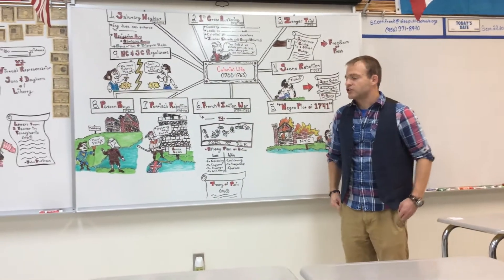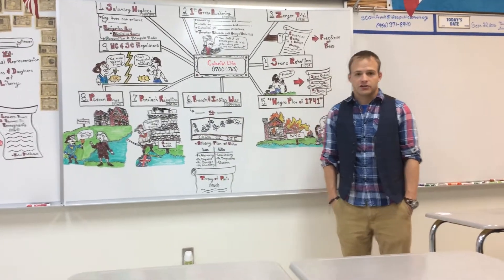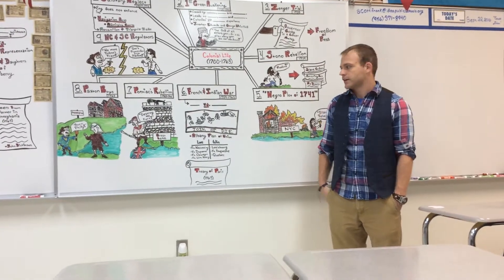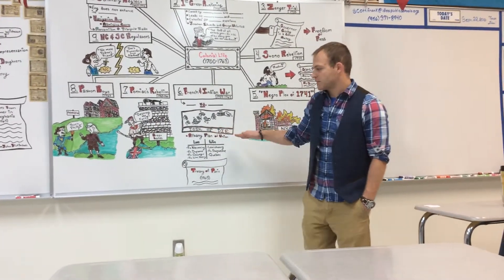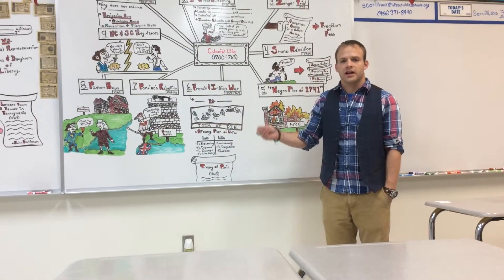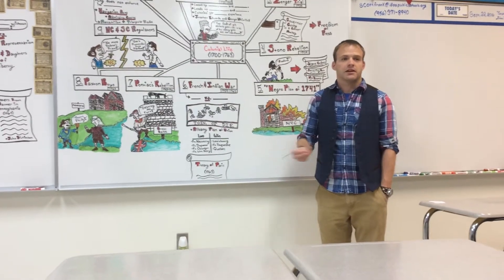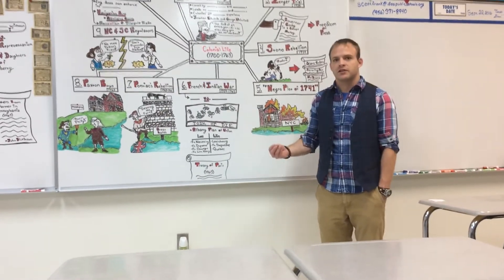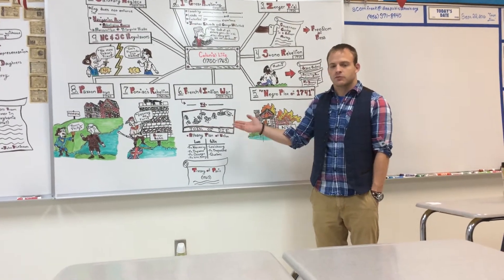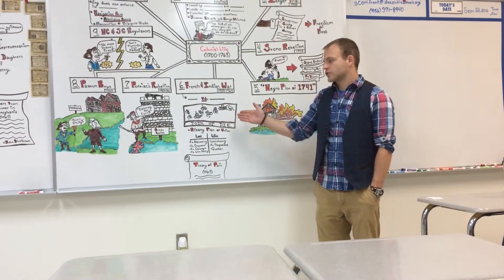Moving to the French and Indian War, 1754 to 1763 — the French and their Native American allies versus the English and their Native American allies. The big takeaway here is 'Join or Die' and the Albany Plan of Union for the colonies to unite under one kind of government. It gets rejected by the colonies because they believed it would give up too much independence — which is ironic, because about 20 years later you've got a Declaration of Independence, which is virtually the same thing.